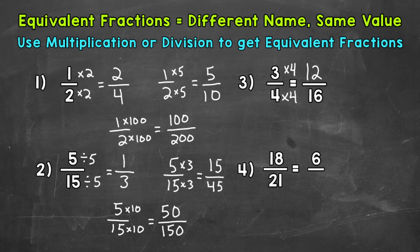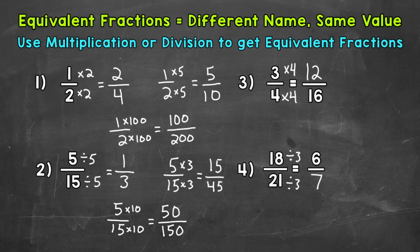For number four, we have 18 twenty-firsts equals 6 and a missing denominator. We're given the numerators: 18 and 6. We need to think about how to get from 18 to 6 — 18 divided by 3 equals 6 — so we do the same thing to the denominator: 21 divided by 3 equals 7. So 6 sevenths is equivalent to 18 twenty-firsts.